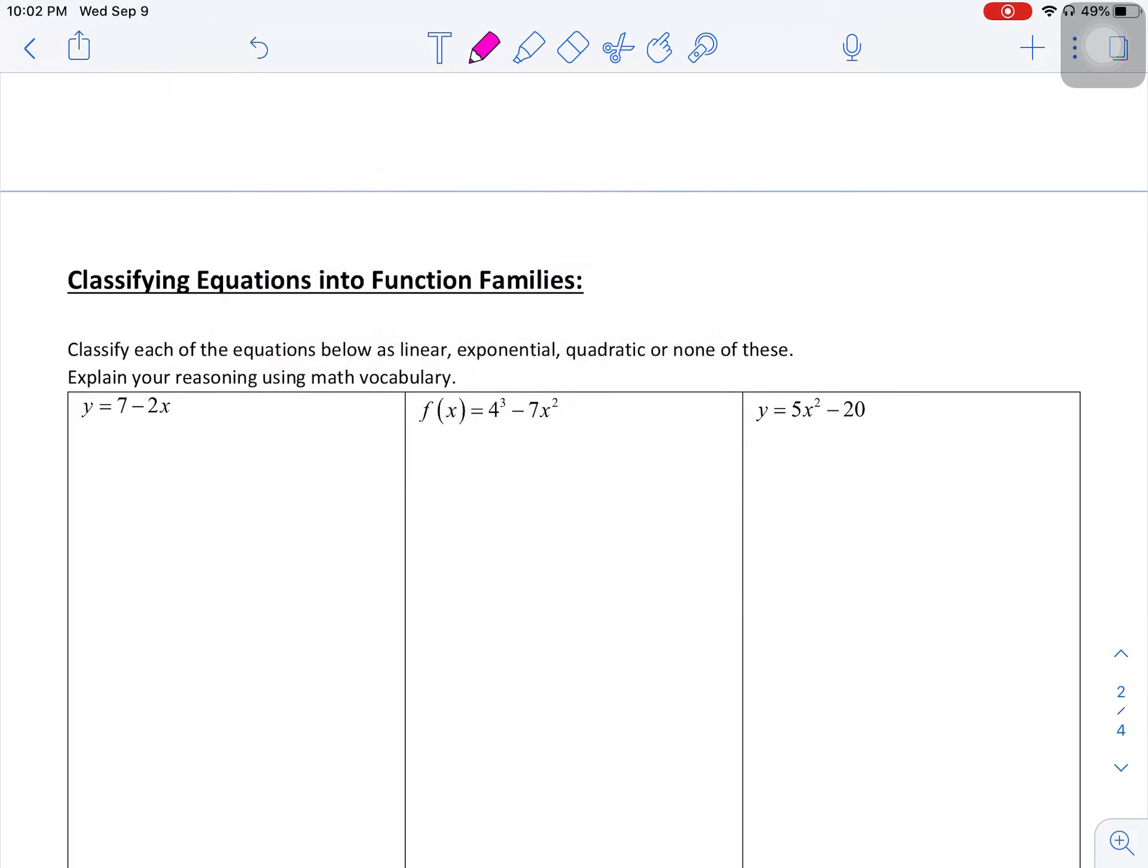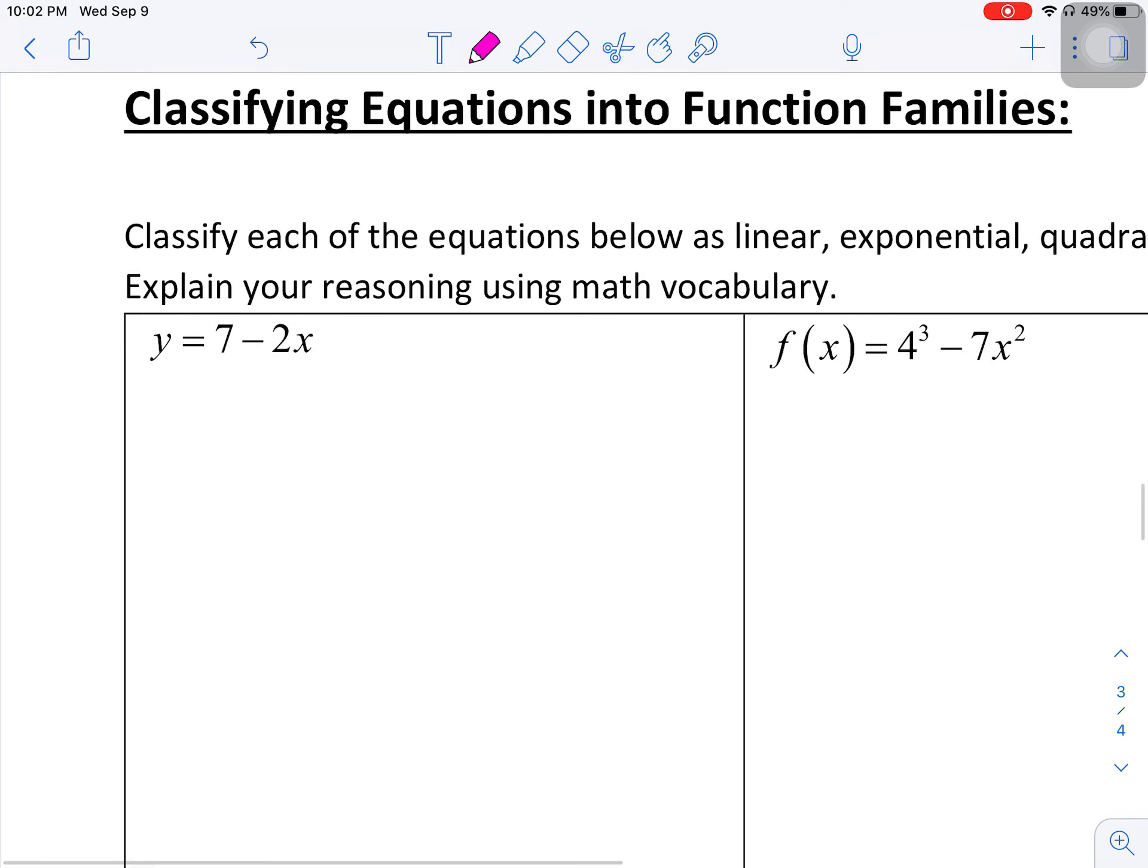So this first problem, we've got y equals 7 minus 2x. And my goal is to either be able to rewrite this as y equals mx plus b for linear, y equals ax squared plus bx plus c for quadratic, or y equals a times b to the x for exponential. And if I can't make it fit any of those, then that's where it becomes none of the above.